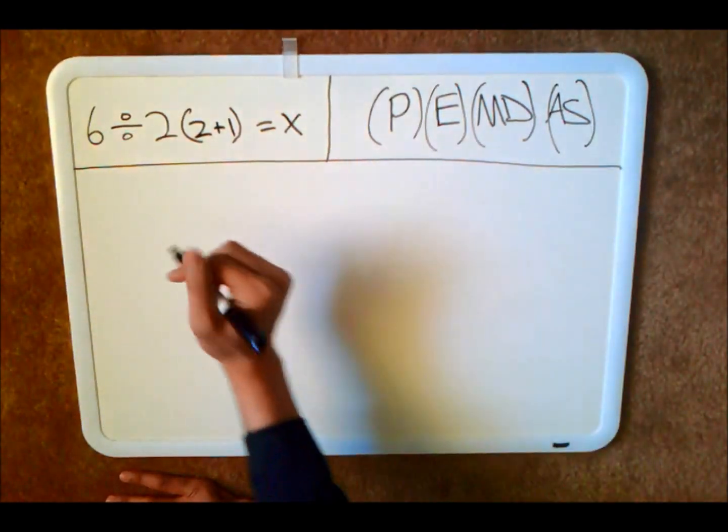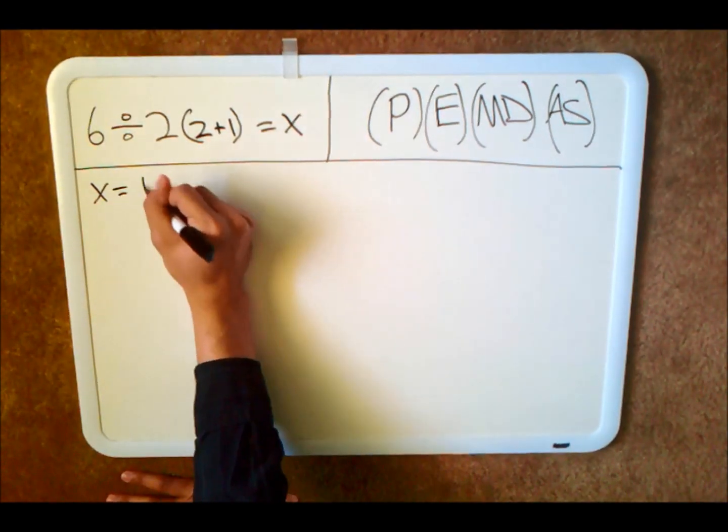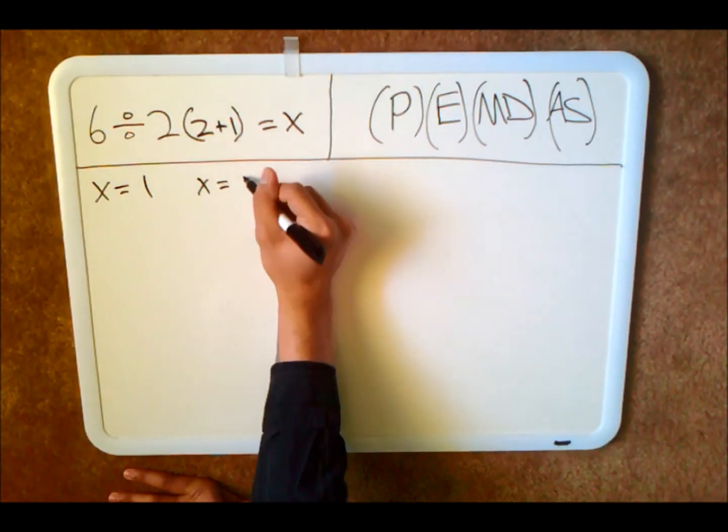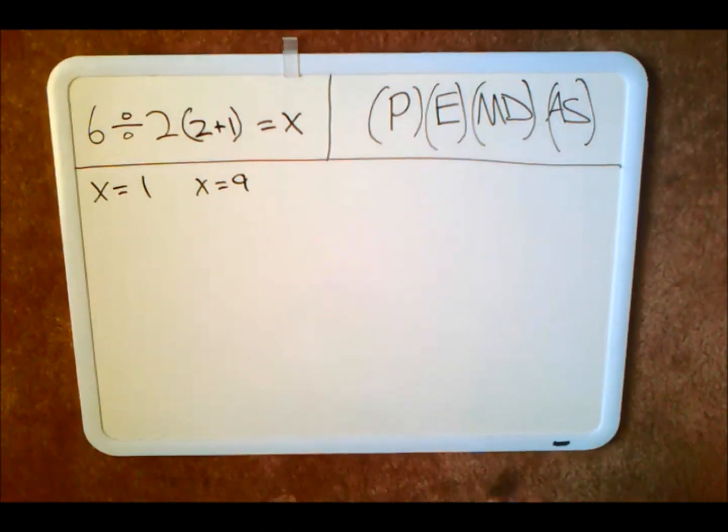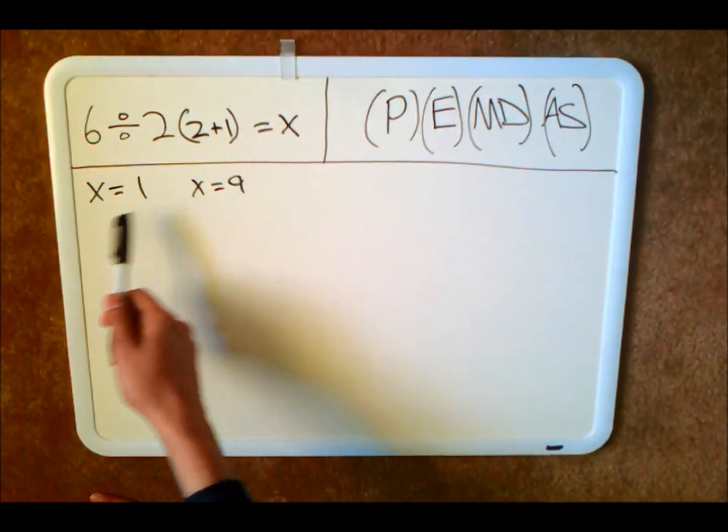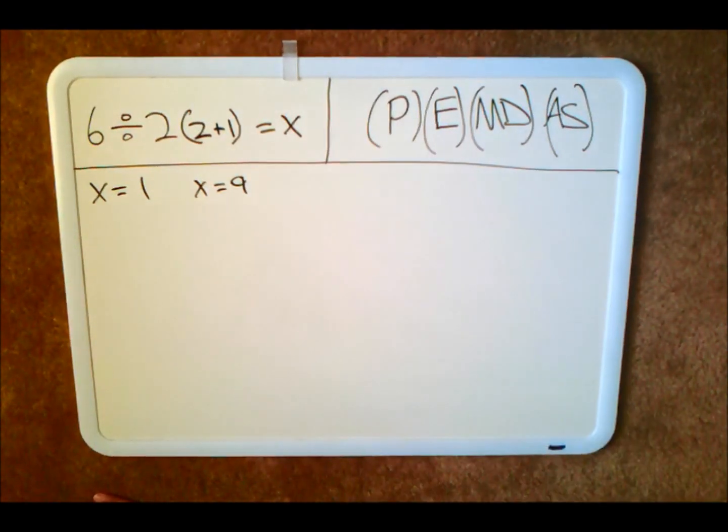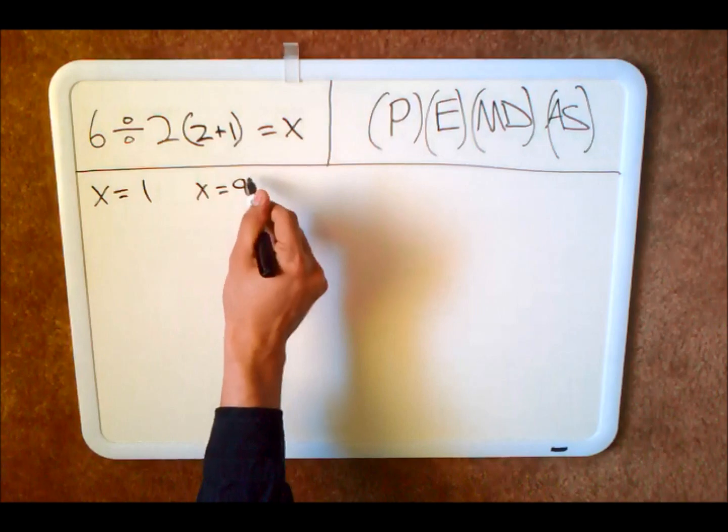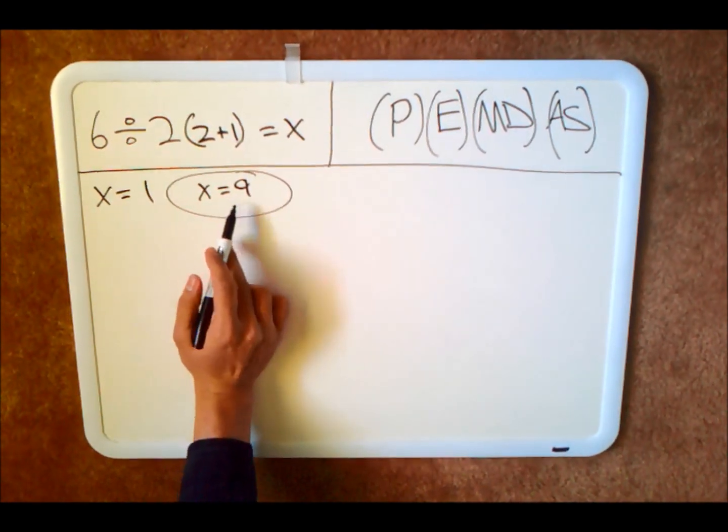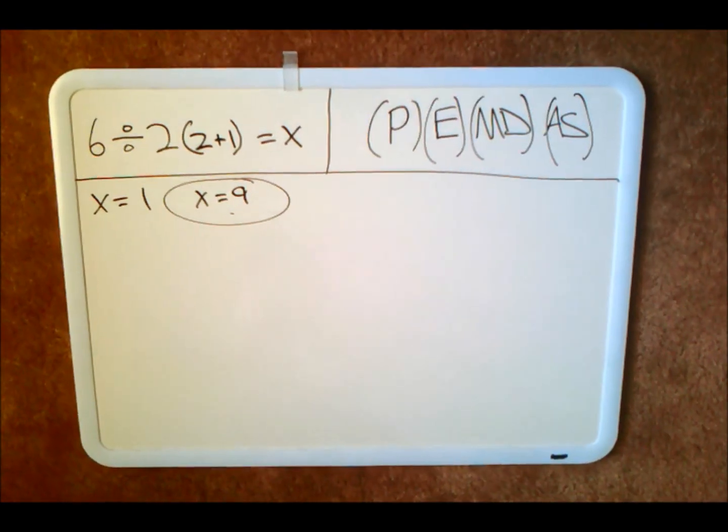There's a lot of confusion whether x equals 1 or x equals 9. Using the order of operations, we can easily figure out which one it is. The people who are getting the wrong answer are doing it incorrectly, of course. I'll go ahead and ruin it and this will be the answer. That is the correct one and this is how you do the problem.